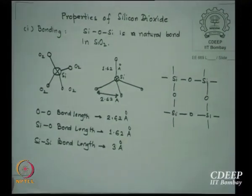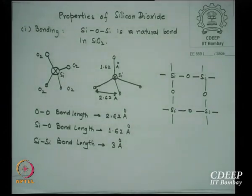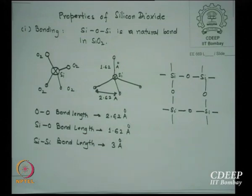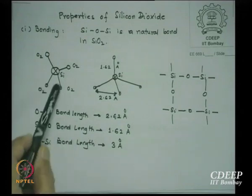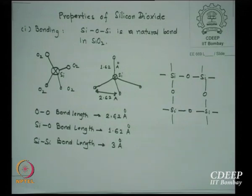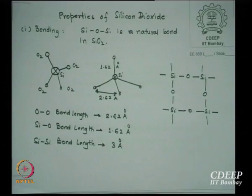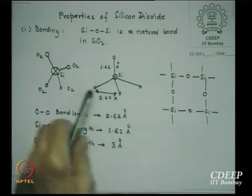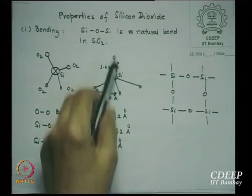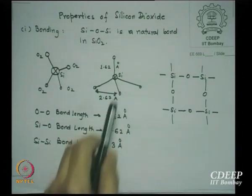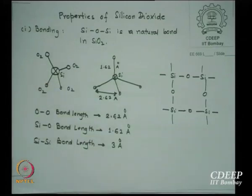Before we start, let us look into basic properties of SiO2 and why it became so popular. The natural bond for SiO2 is Si-O-Si. A silicon atom is surrounded by four oxygen atoms. The oxygen-to-oxygen bond length is 2.62 Angstroms, silicon-to-oxygen bond length is 1.62 Angstroms, and silicon-to-silicon distance is around 3 Angstroms.